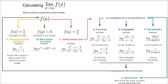This flowchart says, well, if f of a is equal to a real number, we're done — probably. The reason for that caveat is that the limit is a different thing than the value of the function. Sometimes they happen to be the same — in fact, that's the definition of a continuous function, which we talked about in previous videos. But sometimes they aren't the same.